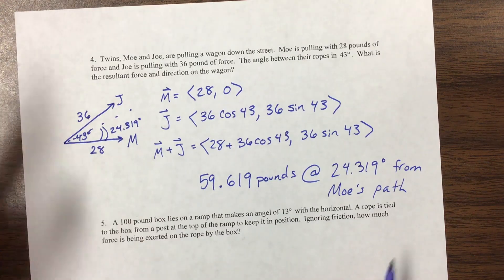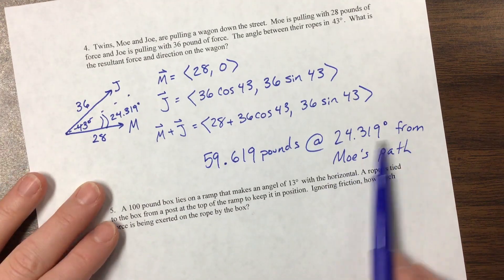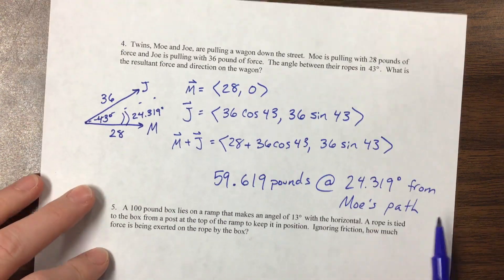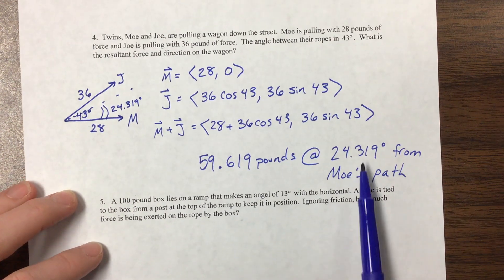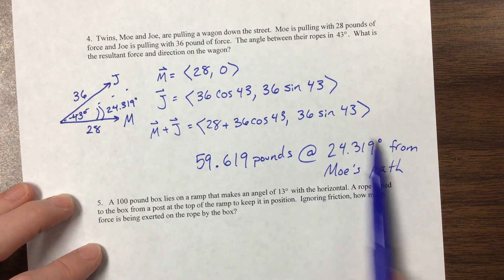So be consistent. Label what's appropriate. Make sure if you give me the other one, but you don't tell me whose path it's from, I'm not going to give you full credit. So I want to know not only that you can get the right number, but that you know what it relates to.